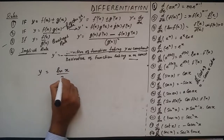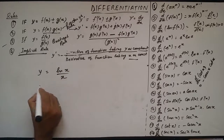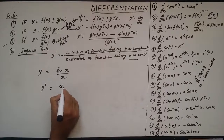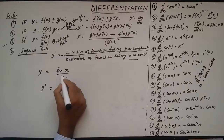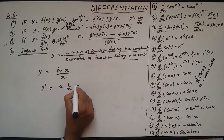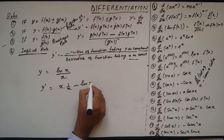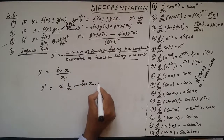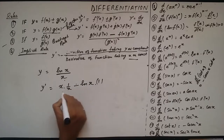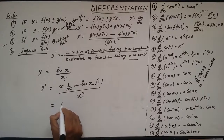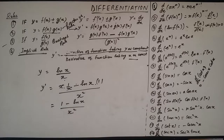Now ln(x) upon x — we have to apply the quotient rule. It will be: x multiplied by the derivative of the numerator, minus the numerator into the derivative of the denominator (which is 1), all upon the denominator squared. The x and x cancel, giving us (1 − ln x) upon x².